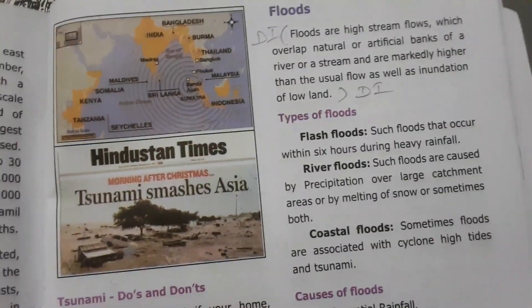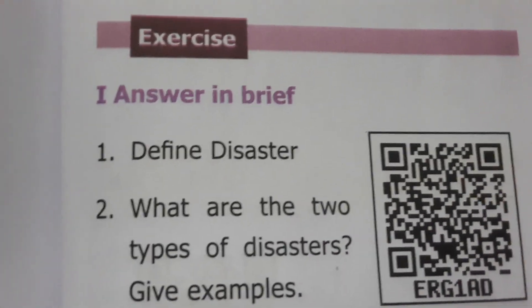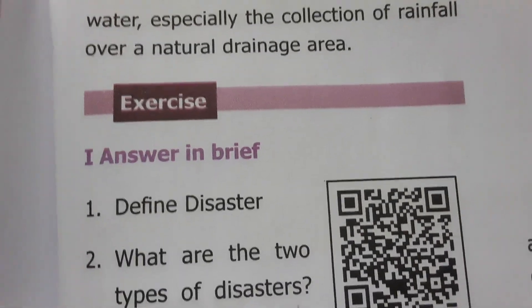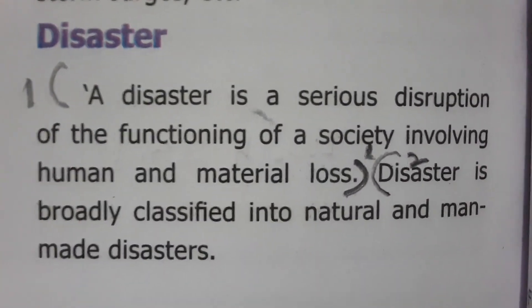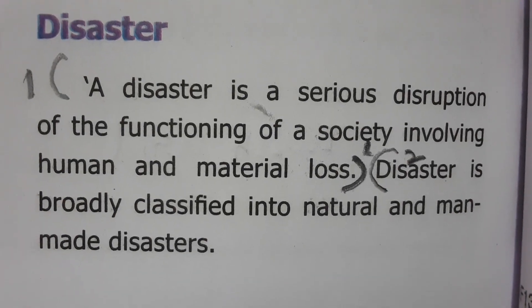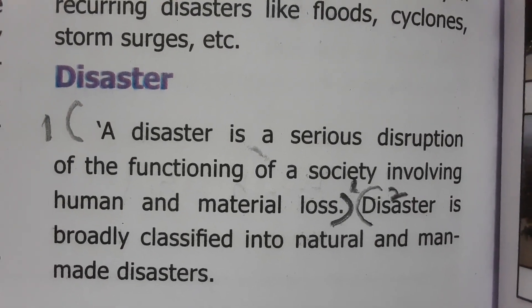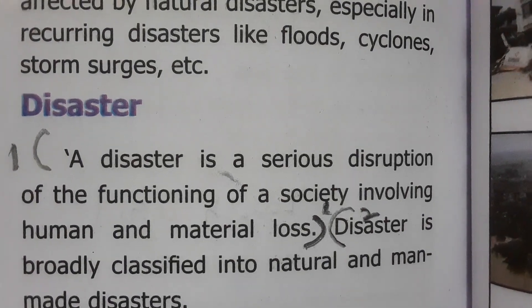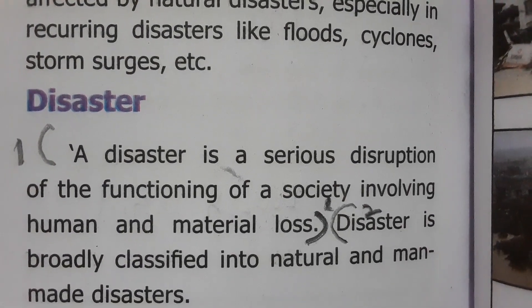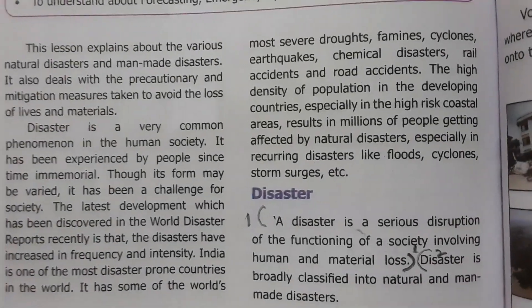Let's see the book-back evaluations. First one is: Answer in brief — define disaster. Question number one: define disaster. Disaster is a serious disruption of the functioning of a society involving human and material loss. That is the definition of disaster.